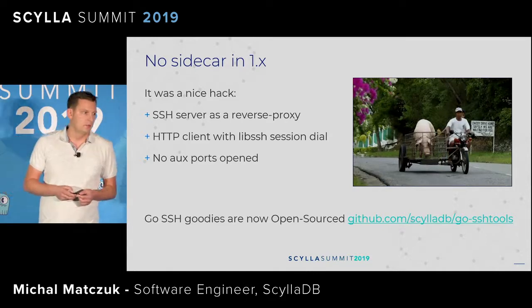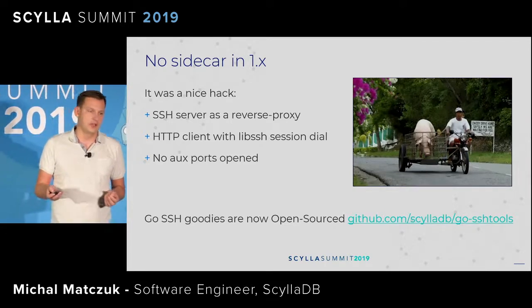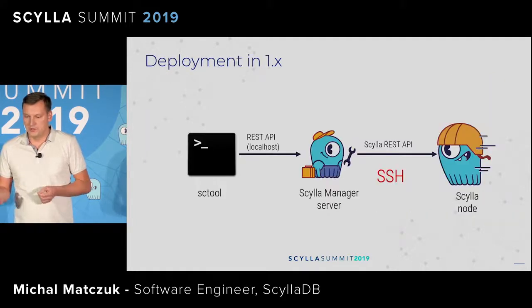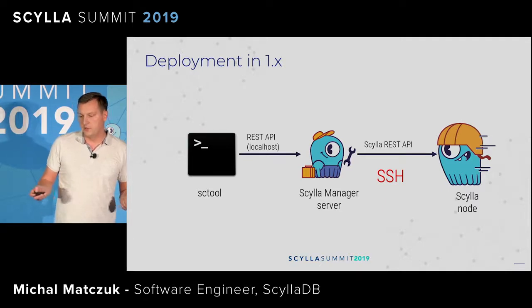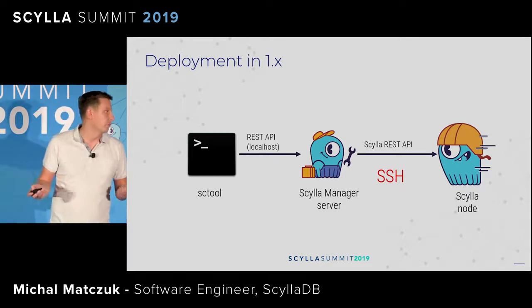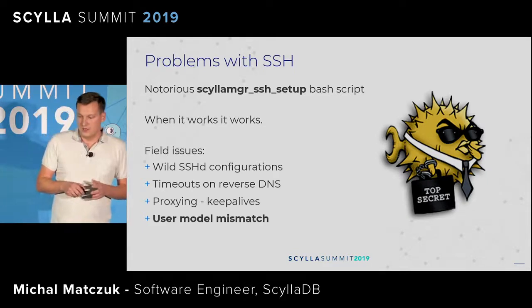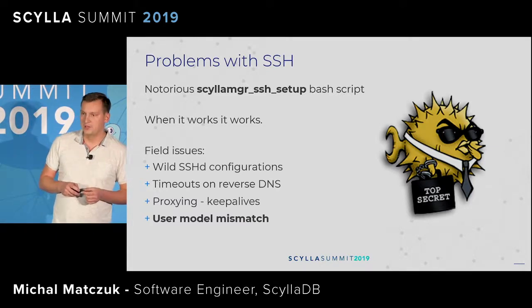Now we're dropping that. We created an SSH tool — if you're in Go development and interested in SSH tools for Go, we open-sourced pretty much what we had in the manager project. But it's no longer being used. In the deployment view, the SSH tool was a command-line tool for Scylla Manager, and Scylla Manager would address localhost, which communicated with nodes over SSH or in direct mode.